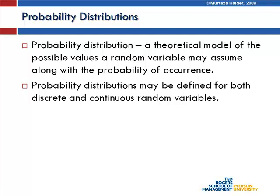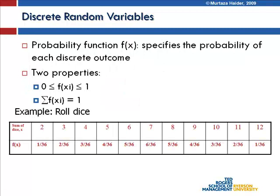A probability distribution is a theoretical model of the possible values a random variable may assume along with the probability of occurrence. If you look at all the possible values a random variable may assume from a theoretical construct, that is a probability distribution. Probability distributions may be defined for both continuous and discrete random variables. To illustrate, let me take the example of two dice — a red one and a black one.